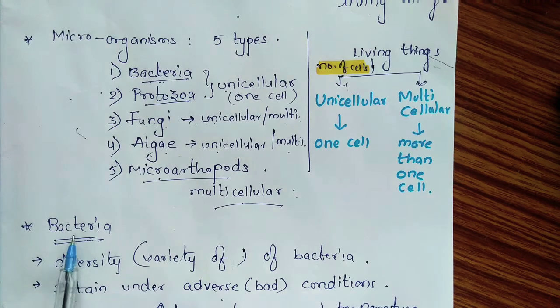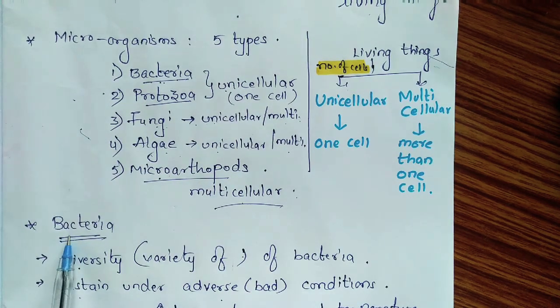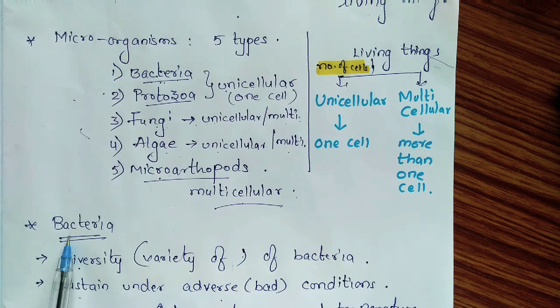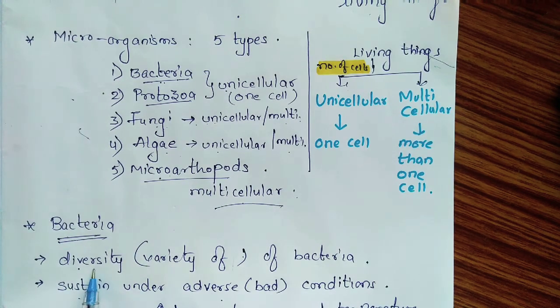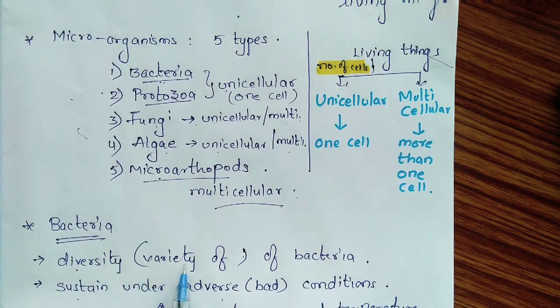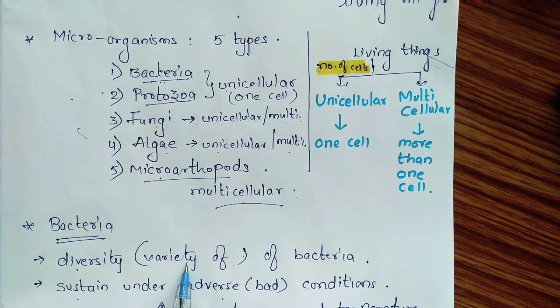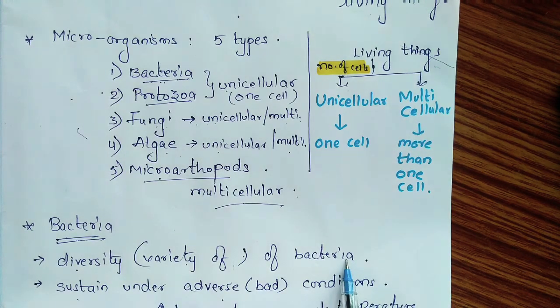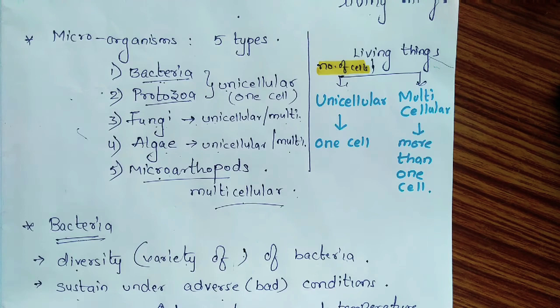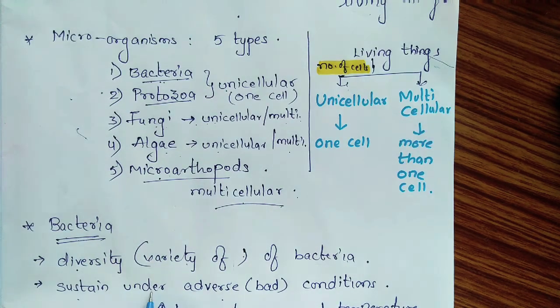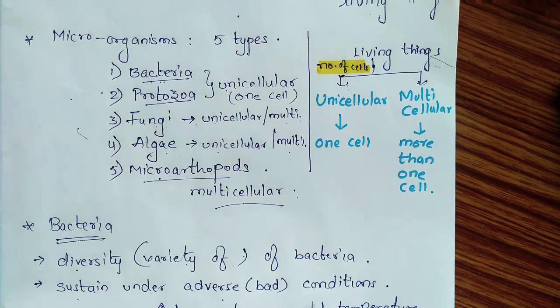The first class of microorganism is bacteria. The specialty of bacteria is its diversity. Diversity means variety. Different types of bacteria we can see around us, and bacteria can sustain in different kinds of adverse conditions.